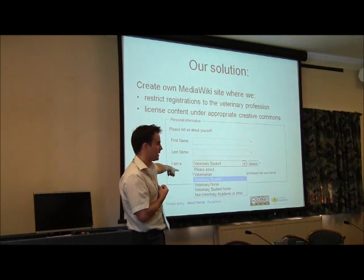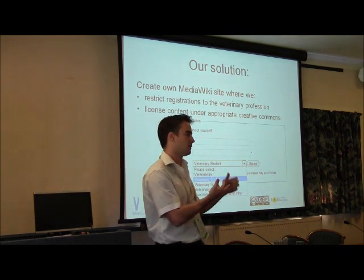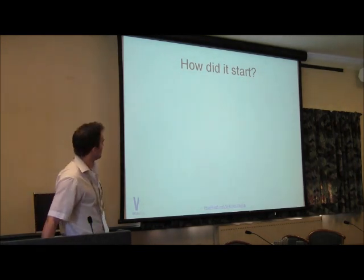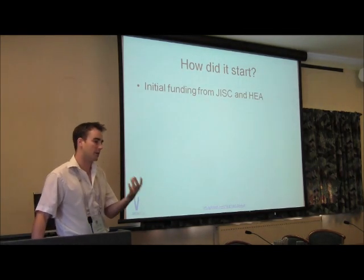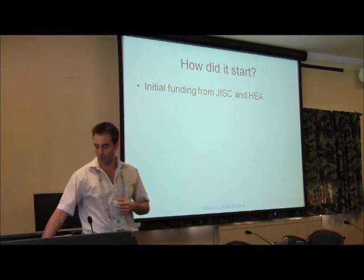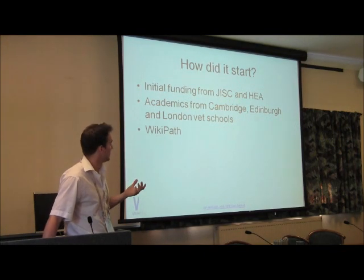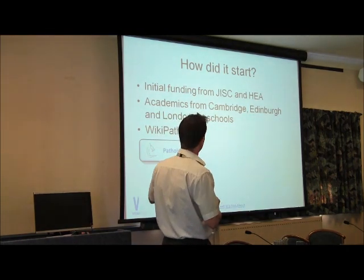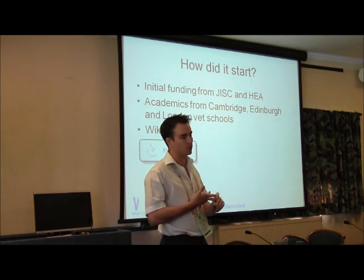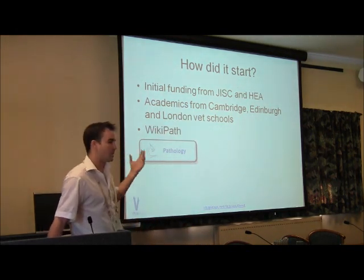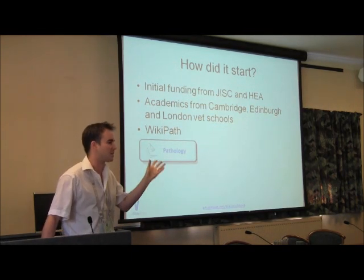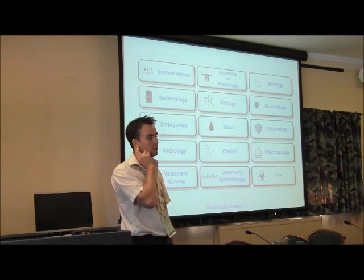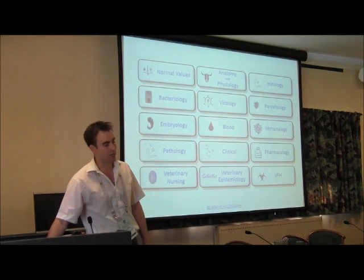So we restrict our registrations — vets, vet students, vet nurses, student nurses, and academics that work at universities. It started a few years ago. We got initial funding from JISC and the Higher Education Academy, centered around development of a pathology section. We started off with academics from a few vet schools — there are now seven UK vet schools, and we started with Cambridge, Edinburgh, and London. We've since renamed WikiPath to pathology because everything was getting 'wiki something,' and this is the breadth of content we're now looking at, having gone wider to cover the curriculum more fully.